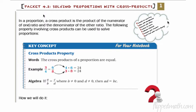Okay, welcome to Unit 4, Section 2: Solving Proportions with Cross Products. In a proportion, the cross product is the product of the numerator of one ratio and the denominator of the other. Here's it all written out.